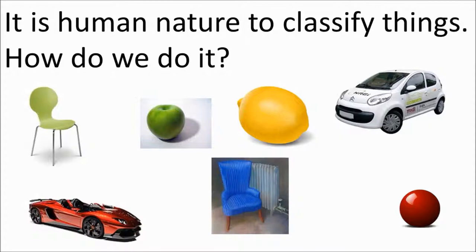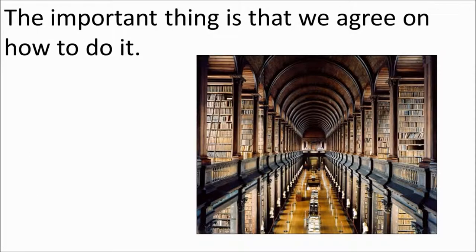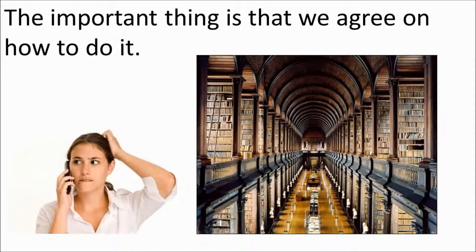Have a look at this random assortment of objects. How would you go about classifying them? How would you split them up into groups? What criteria would you use — would you classify them on the basis of colour or shape? There are lots of different ways of doing it, but the most important thing is that we are all using the same method. This is so scientists can talk to each other without confusion.